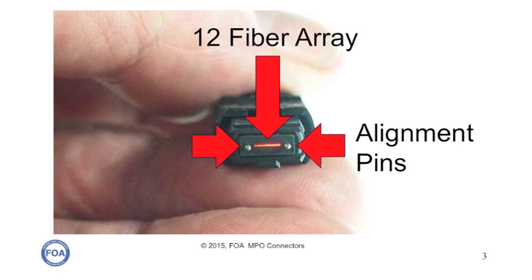When you mate two of these connectors, the ferrules are aligned by alignment pins. One connector will have pins, the other connector will have holes, and when they mate, that's supposed to align the fibers accurately enough to have low loss.